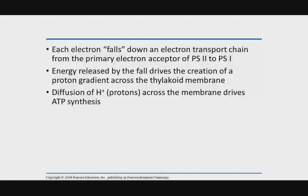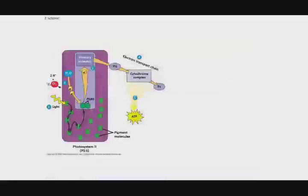Those electrons that it passes off now fall down a redox gradient, just like we did in the electron transport chain of cellular respiration. As it moves from protein to protein, from redox reaction to redox reaction, we're going to pump protons across the membrane.